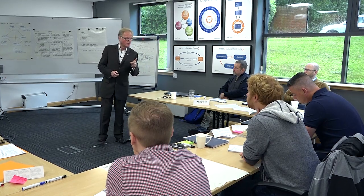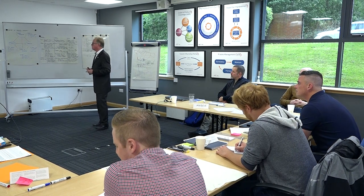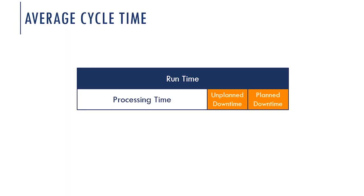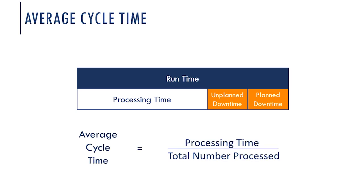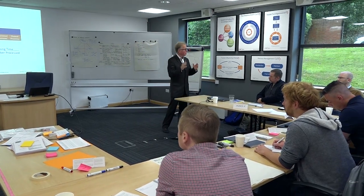All these calculations are in your process manager towards the back. The average cycle time: to work it out, we want to know from the total run time what was the unplanned downtime and the planned downtime, leaving us with the processing time. The average cycle time is then the processing time divided by the total number processed. We're taking out the downtime to get a clear picture of how many the process can make when it's running. That gives us the average cycle time.